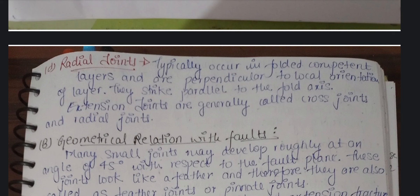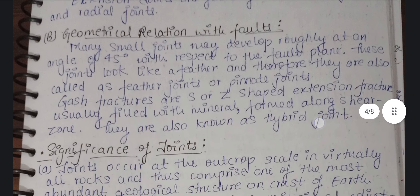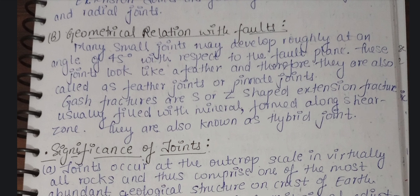The geometrical relation with folds: many small joints may develop roughly at an angle of 45 degrees with respect to the fold plane. When joints develop at a 45-degree angle with the fold plane, we call them feather joints or pinnate joints. I have mentioned these in the genetic classification as well — here is their geometrical relation.